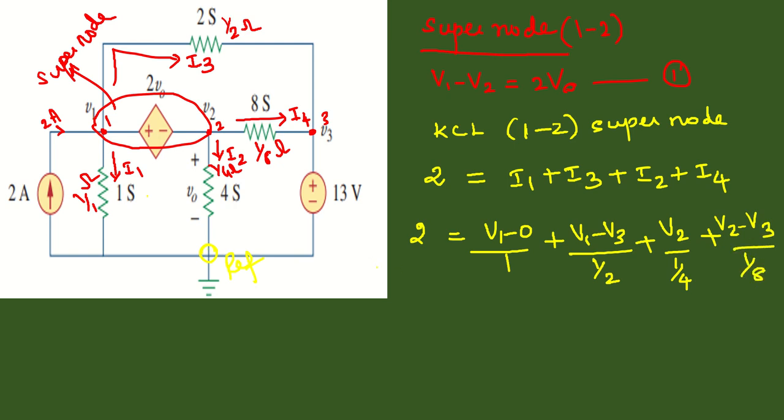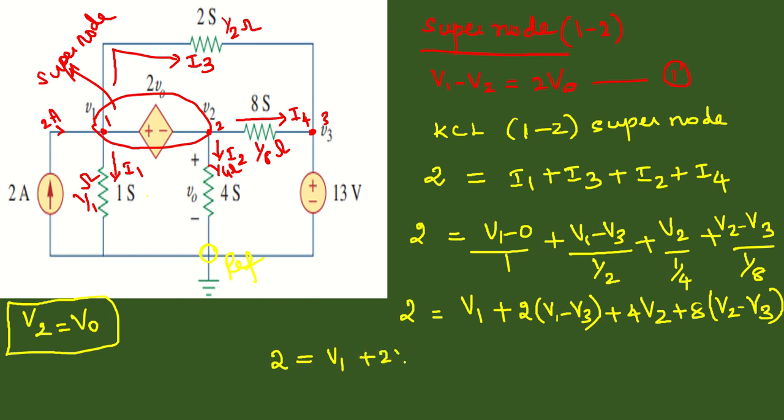We have to notice that V2 equals V0, both are the same. Now continuing, 2 equals V1 plus 2 times (V1 minus V3) plus 4 times V2 plus 8 times (V2 minus V3). This simplifies to 2 equals V1 plus 2V1 minus 2V3 plus 4V2 plus 8V2 minus 8V3, which becomes 2 equals 3V1 plus 12V2 minus 10V3.